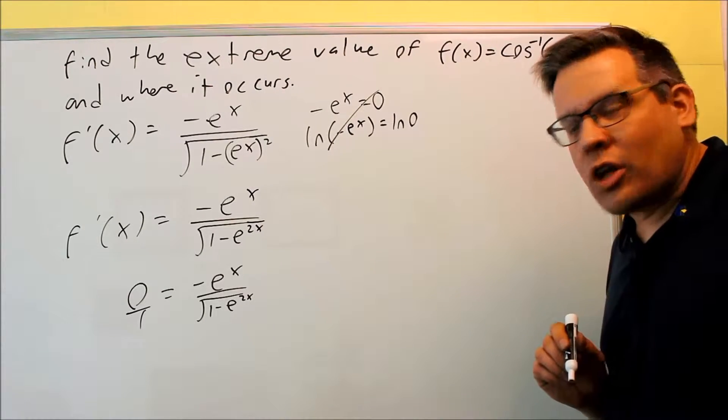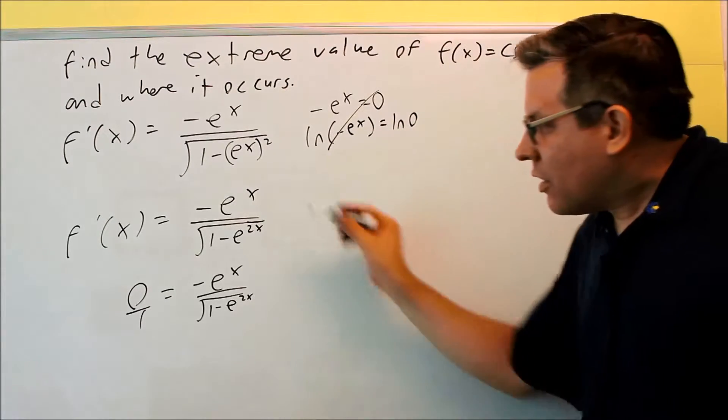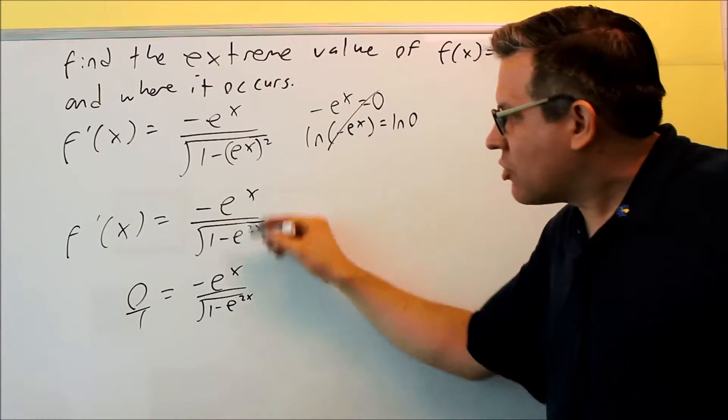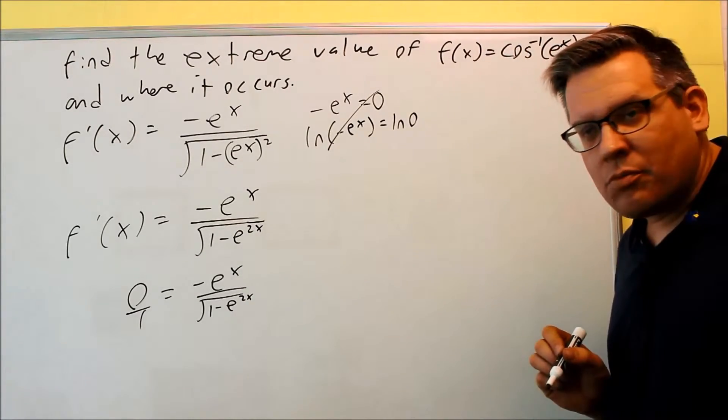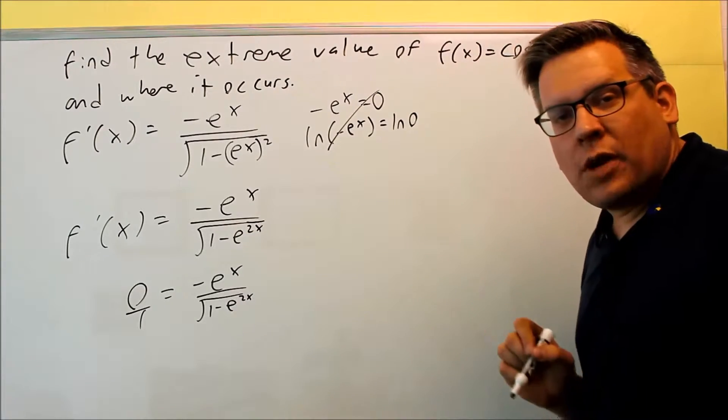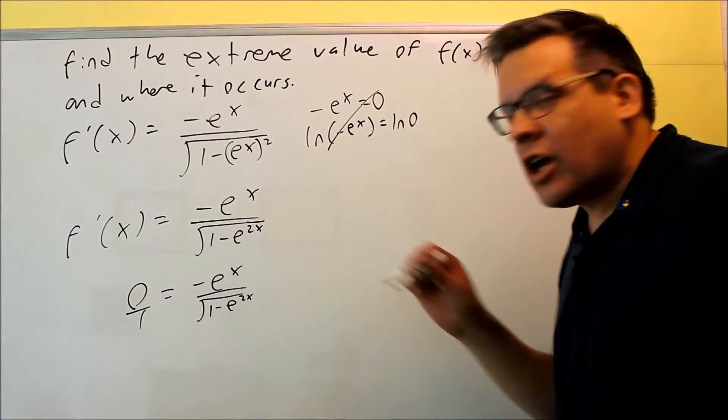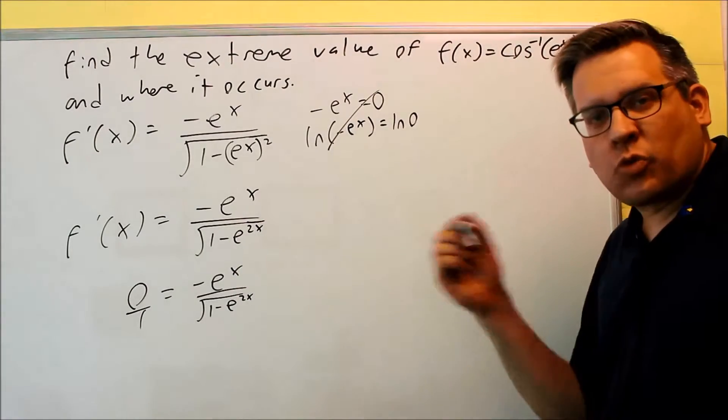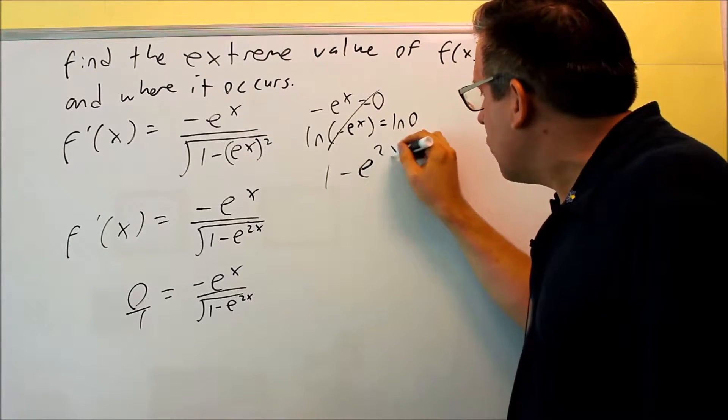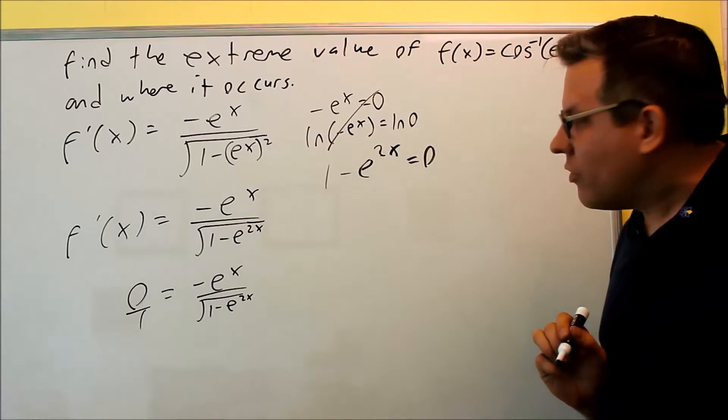But remember, there's another way we can find critical numbers. And that's where we look at where the derivative is going to be undefined. Since we have a fraction here, the only place where it could be undefined is a situation where I'm dividing by 0. So I basically just want to look at what x value will make the bottom one equal to 0. And actually, all I have to do is look at what's inside the square root because we know square root of 0 is 0. So what I'm going to do is take the bottom one, what's inside the square root, and set that equal to 0 to try and solve.